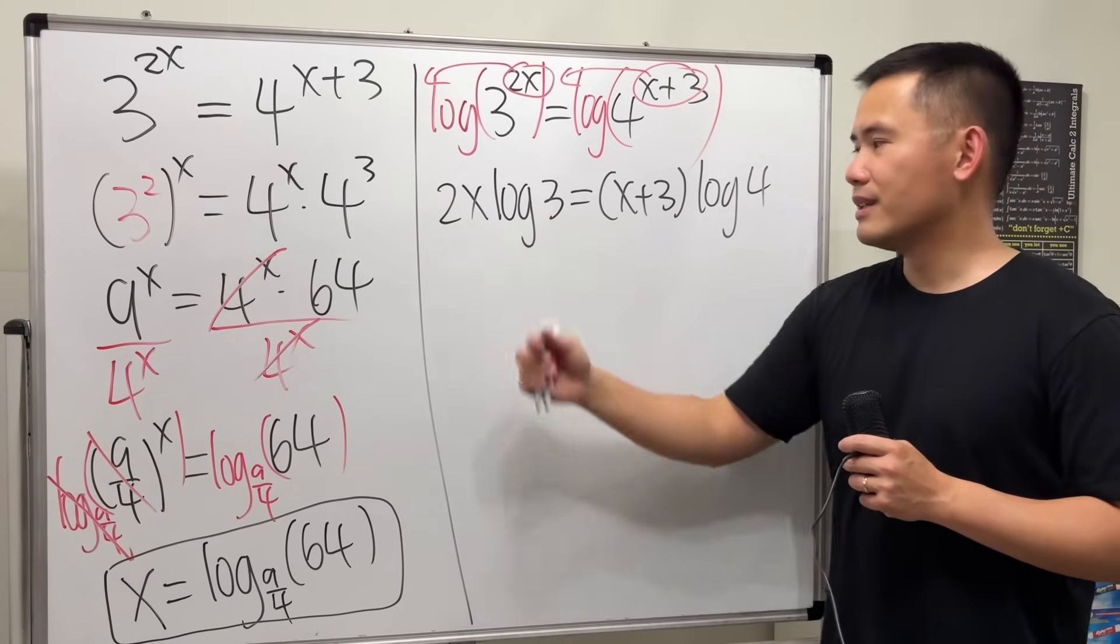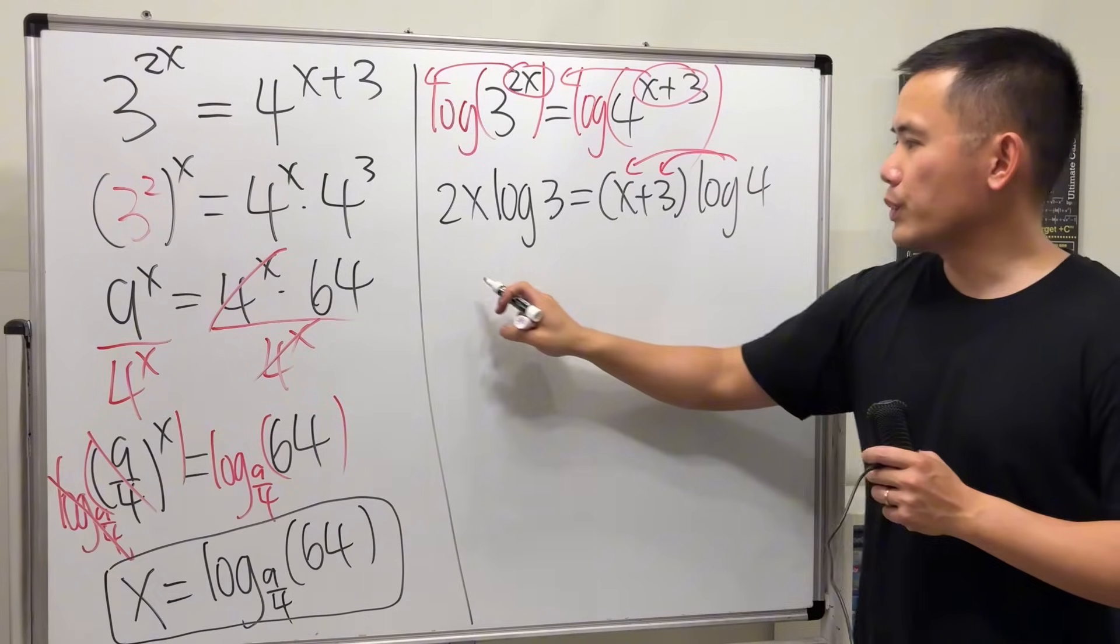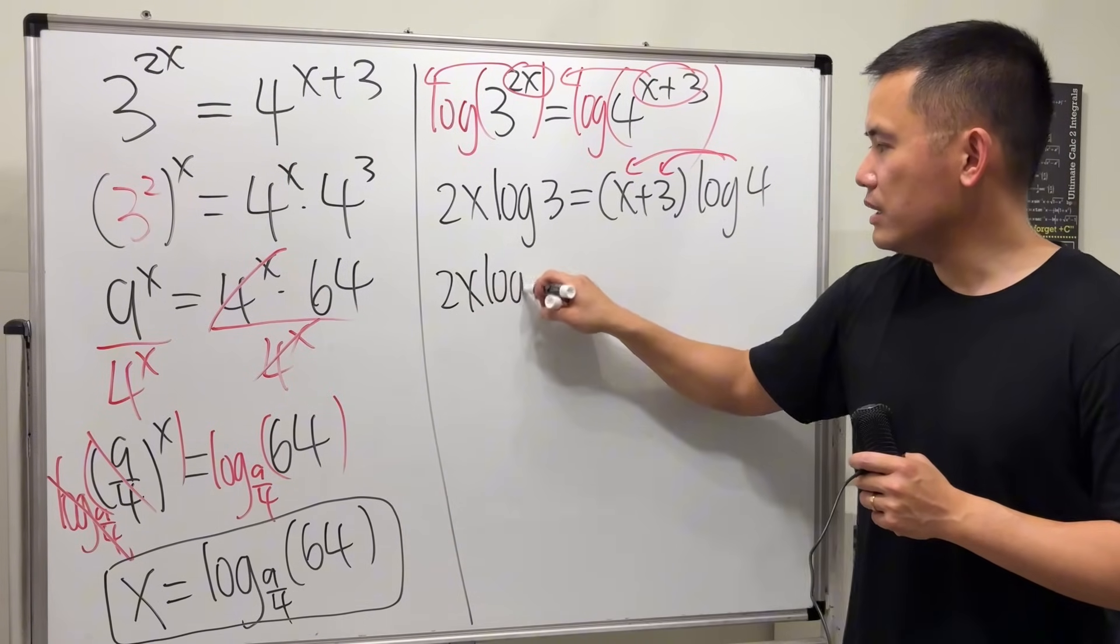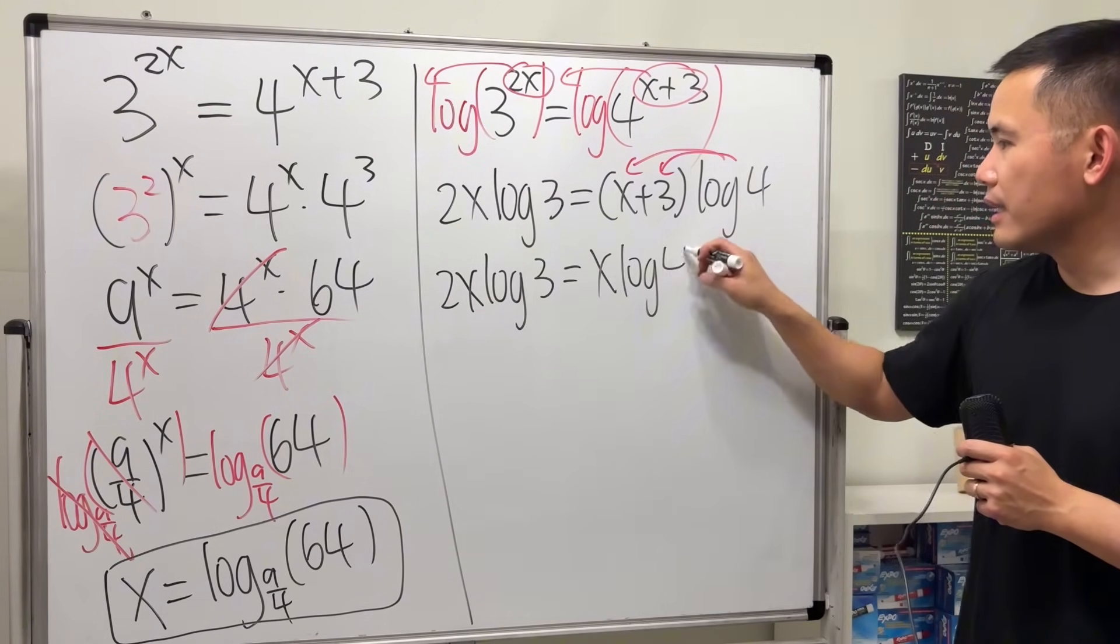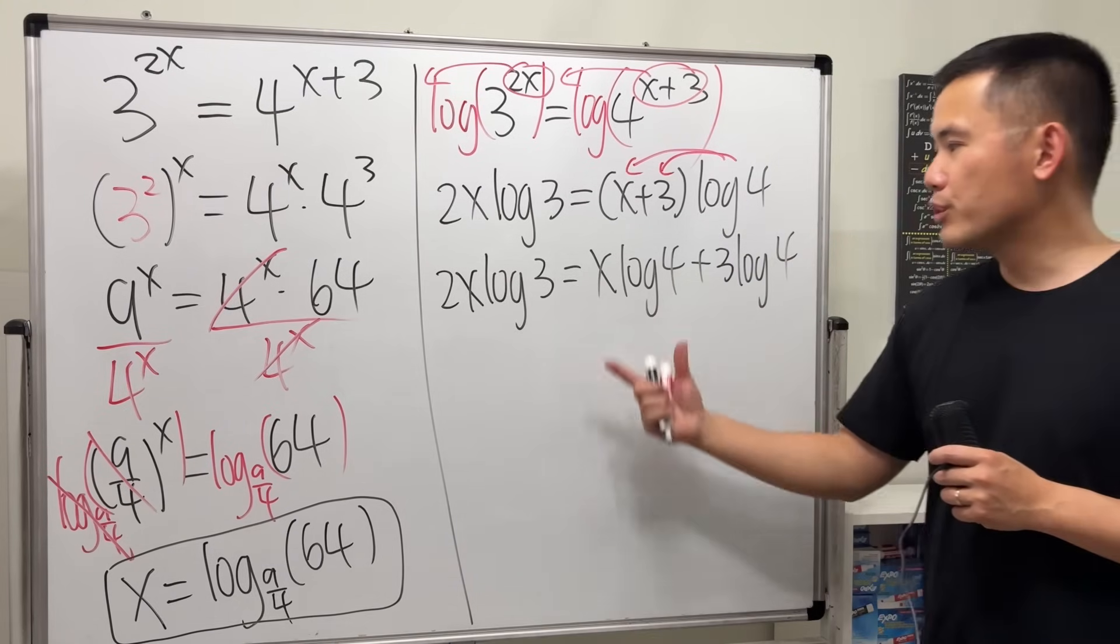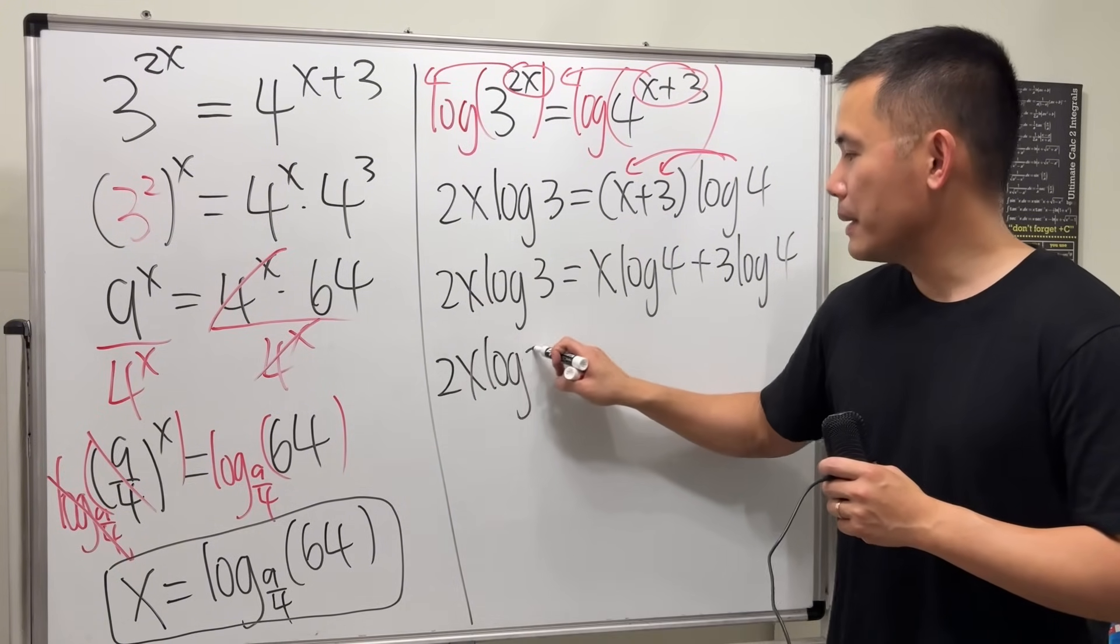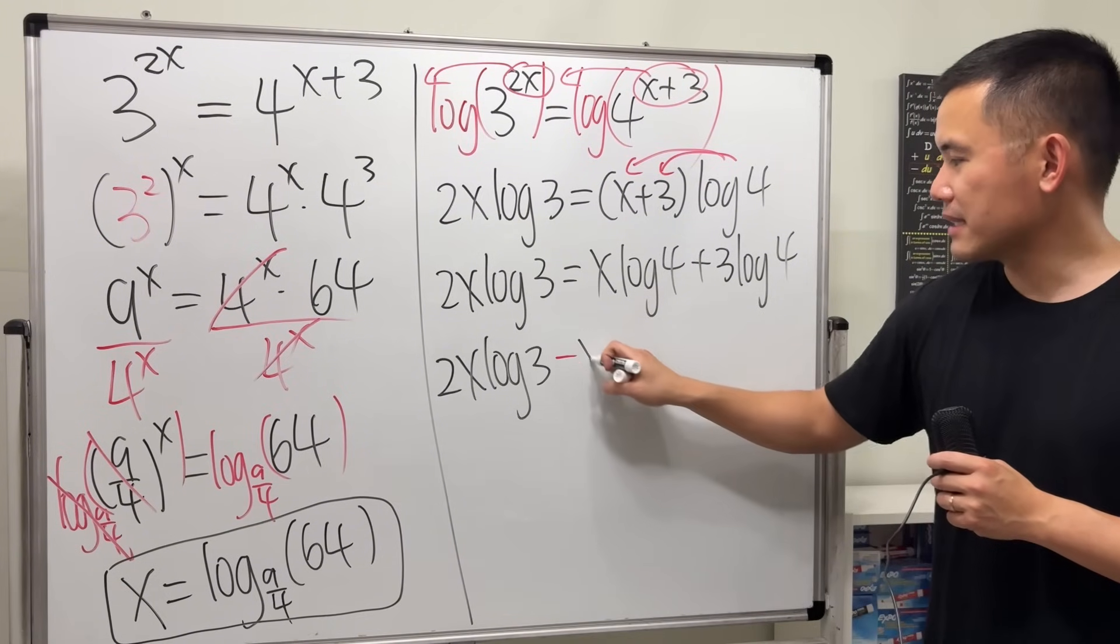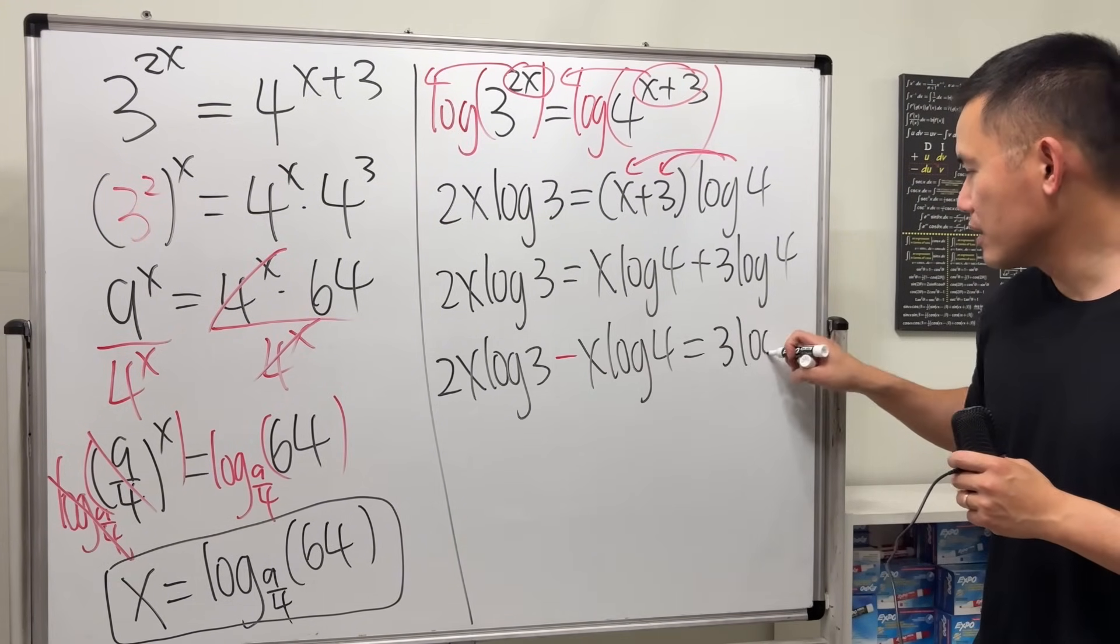Now this is just a number, and then we have a number times that, so just distribute that. So we get 2x·log(3) = x·log(4) and then plus 3·log(4), like so. And then move this to the other side. We will have 2x·log(3) - x·log(4), and that's equal to 3·log(4).